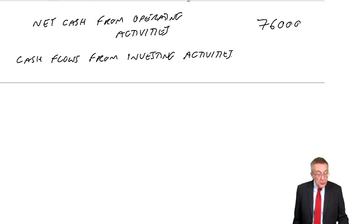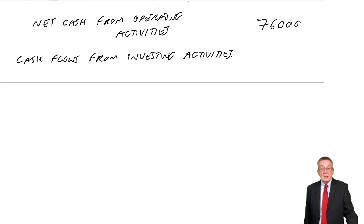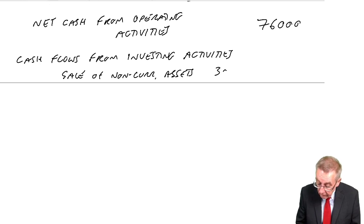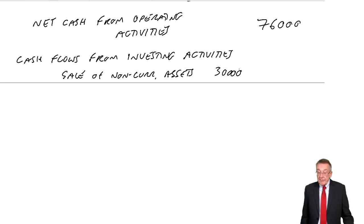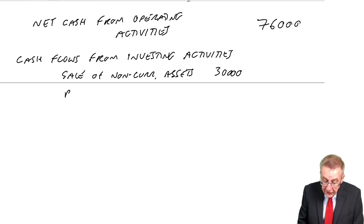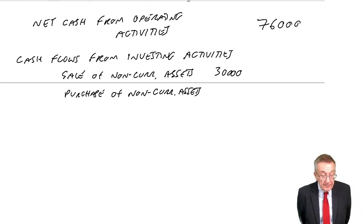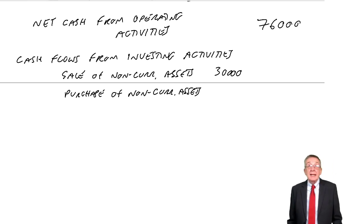From note two: during the year there were sales of non-current assets for £30,000 — that's a cash receipt, an inflow. The outflow is the purchase of non-current assets. Here I'm not told how much we spent, but we must have bought some because the non-current assets went up a lot in the statements of financial position. Since there's no note giving the figure directly, I need to calculate it.